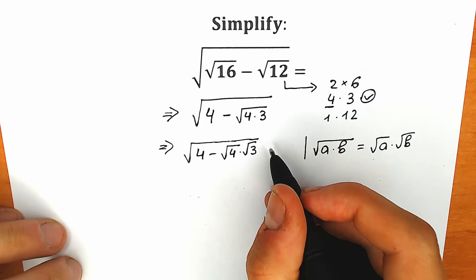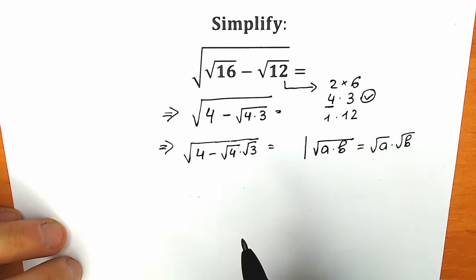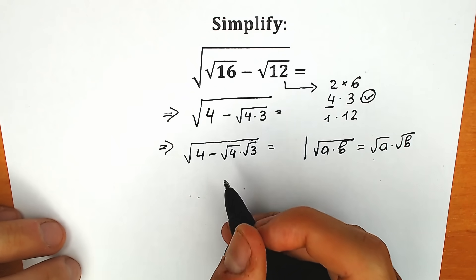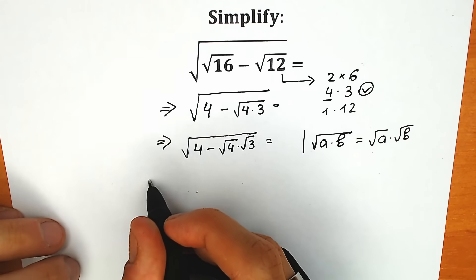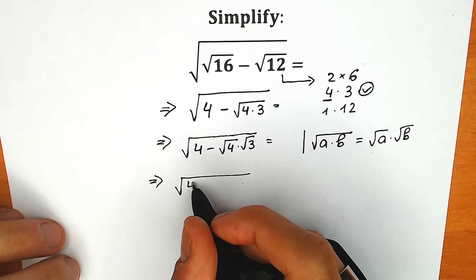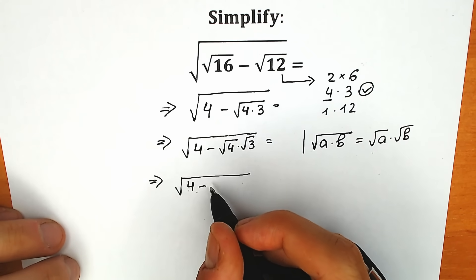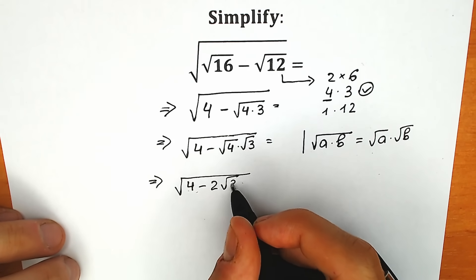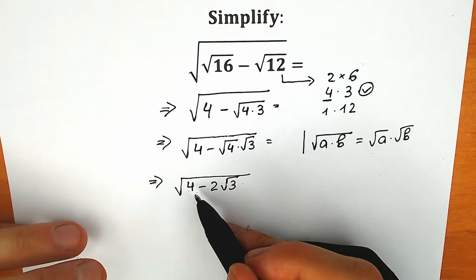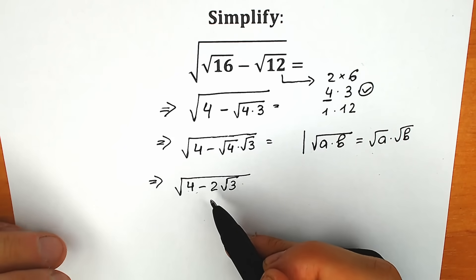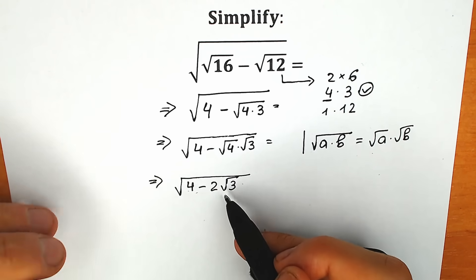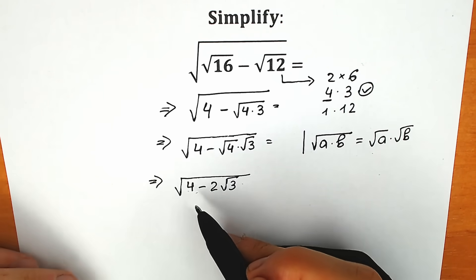I really hope you understand it. Right now, square root of 4 equals 2 — this is a known table case. So we have square root of 4 minus 2 square root of 3. Right now, what is the main idea? We can see that we can't do further simplification — we have square root of 3, we can't simplify it; we have 2, we have 4, so we can't work with it directly.